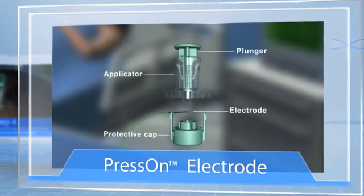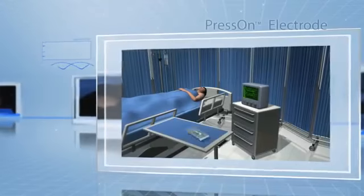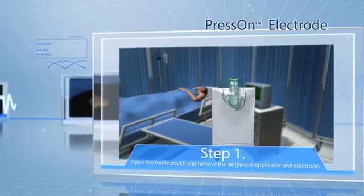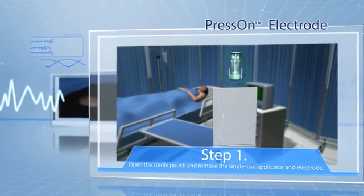Now enjoy a quick guide to using the press-on. Step 1: Open the sterile pouch and remove the single-use applicator and electrode.